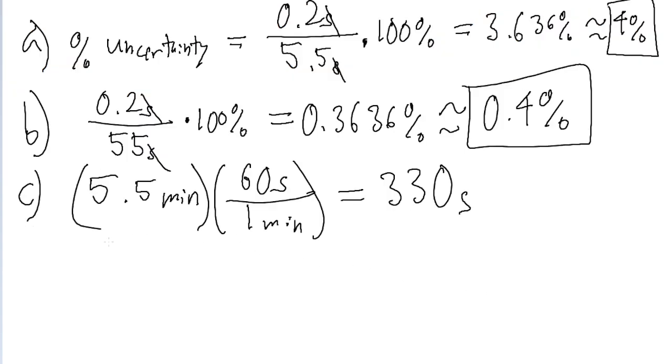That's the time we'll use. We take 0.2 seconds and divide it by 330 seconds, multiply by 100%. Put that into a calculator, and we find a percent uncertainty of about 0.06%.